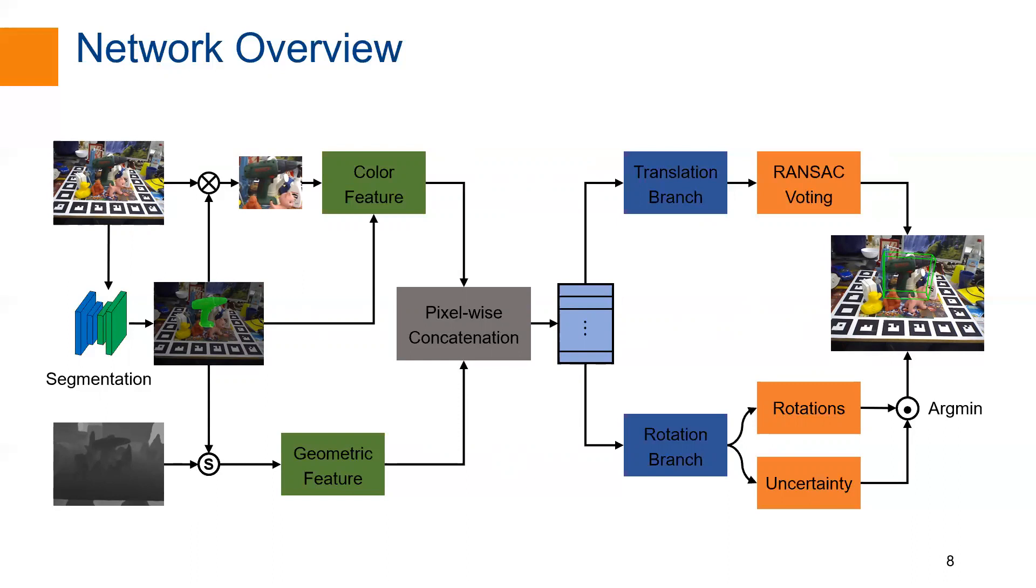We design two separate branches for translation and rotation. The translation branch takes both local and global features to predict per-point direction vectors. While the rotation branch only takes global features to predict the residual rotation and uncertainty score for each anchor. At last, we choose rotation with the smallest uncertainty score and use 3D RANSAC-based voting to find the location. 6D pose is finally recovered for the detected object.